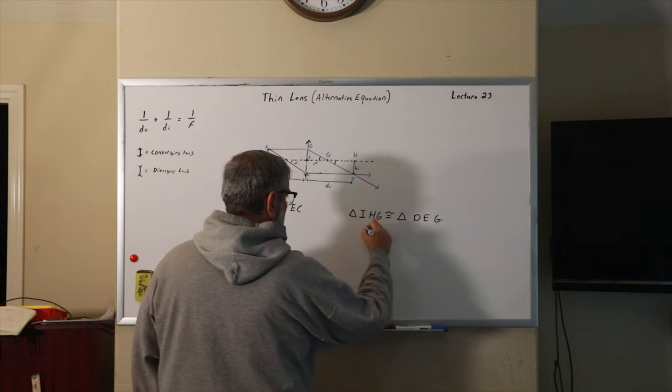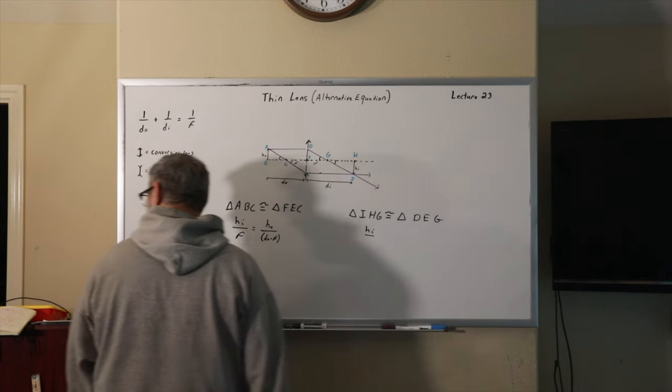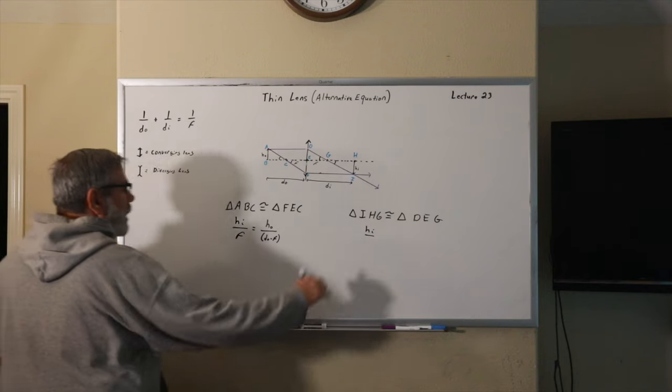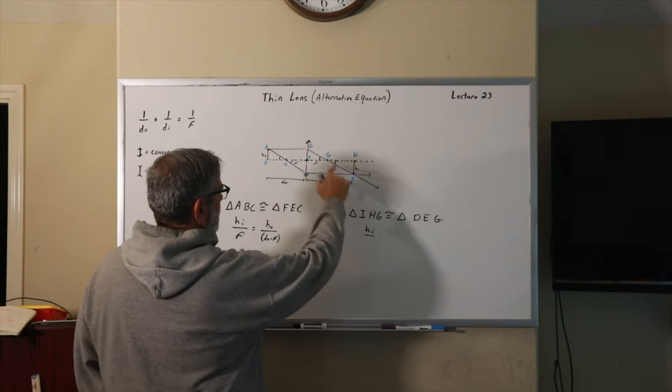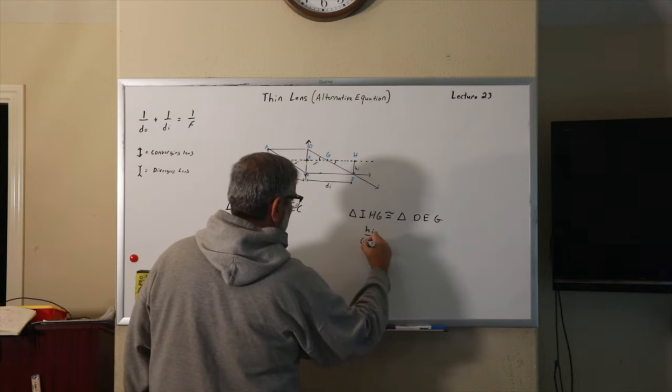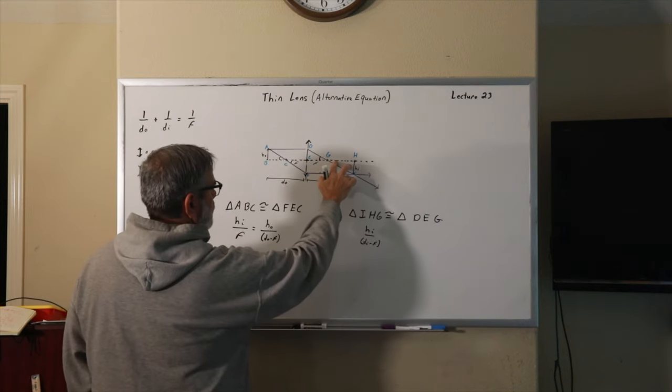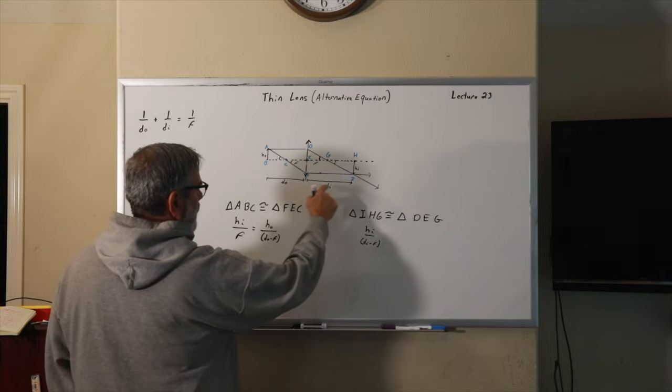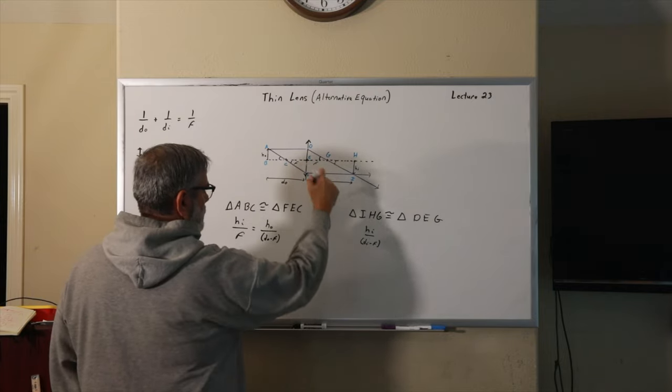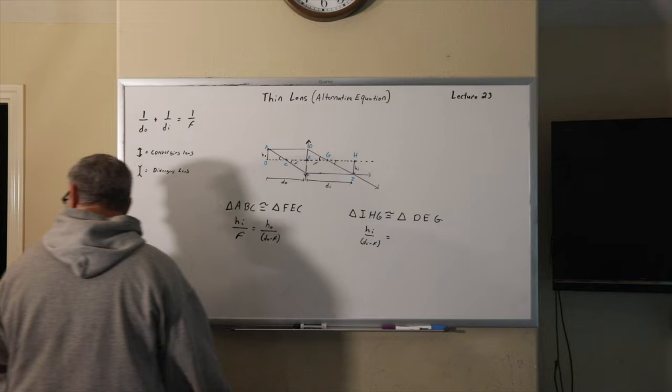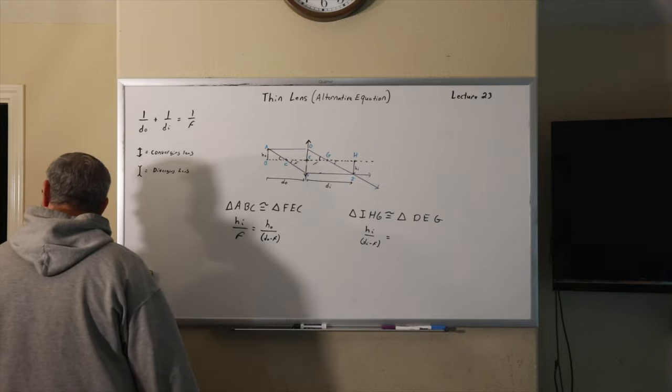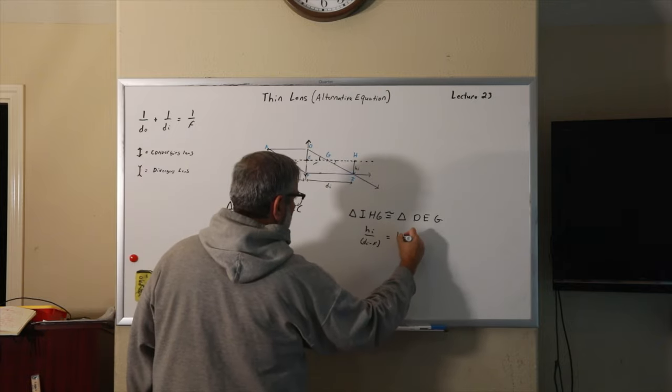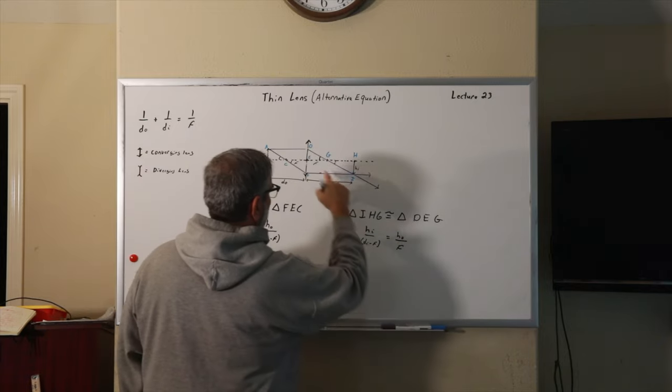And what does that mean? That means that H sub I over, this would be DI minus F, because it's this distance right here, which is D sub I minus F, which is this distance, is equal to this distance, which is H-naught, over F.